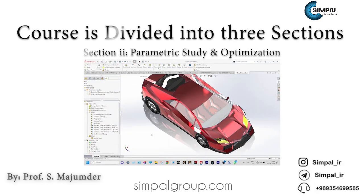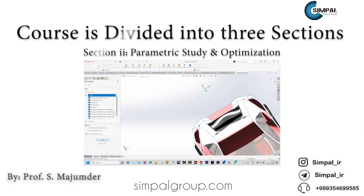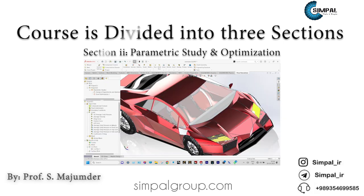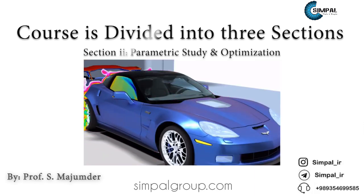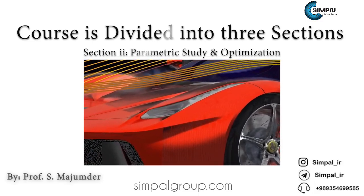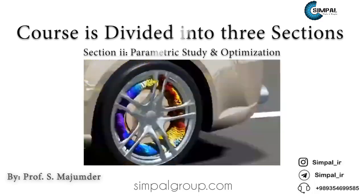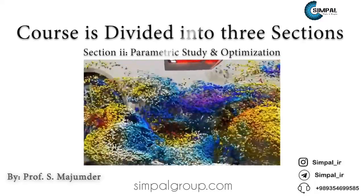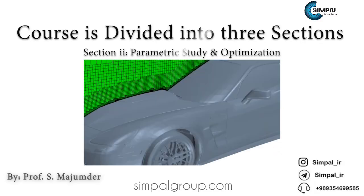Section 2 is about Parametric Study and Optimization. In this section, we will dive into the heart of this course where you will learn how to perform parametric studies and optimization using SOLIDWORKS Flow Simulation. We will start by defining the design parameters and then run simulations for different design variations. You will learn how to analyze the results and make informed decisions to optimize fluid flow for your industrial applications.